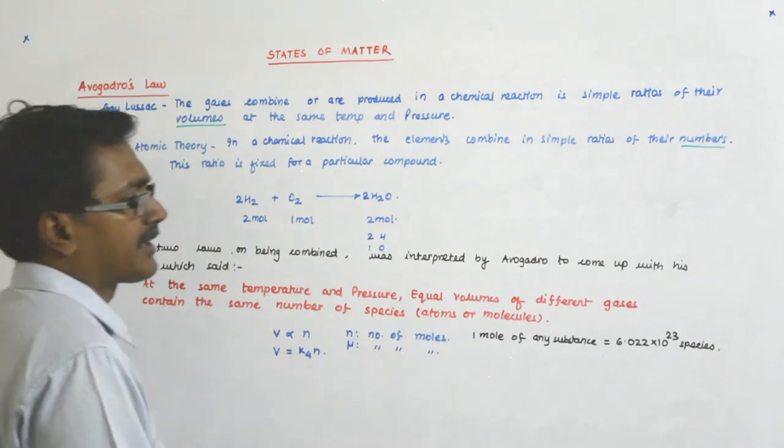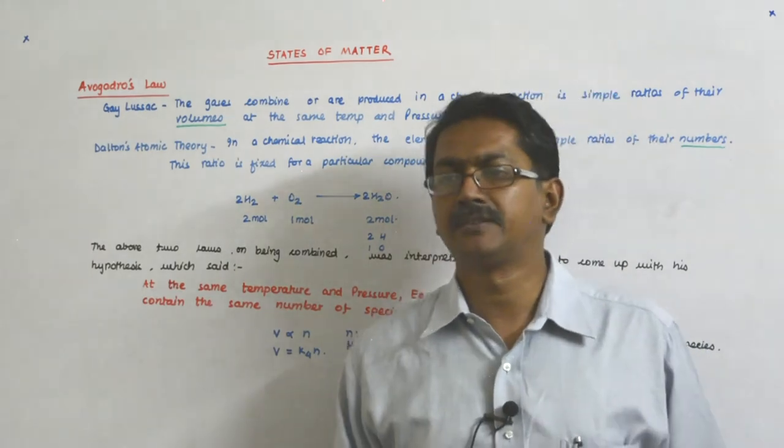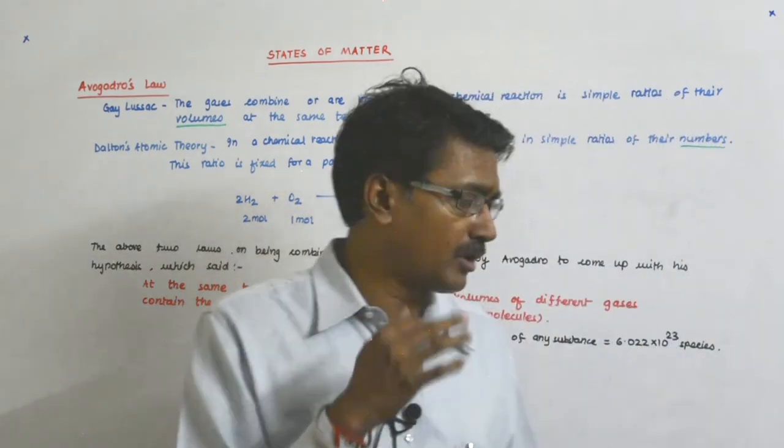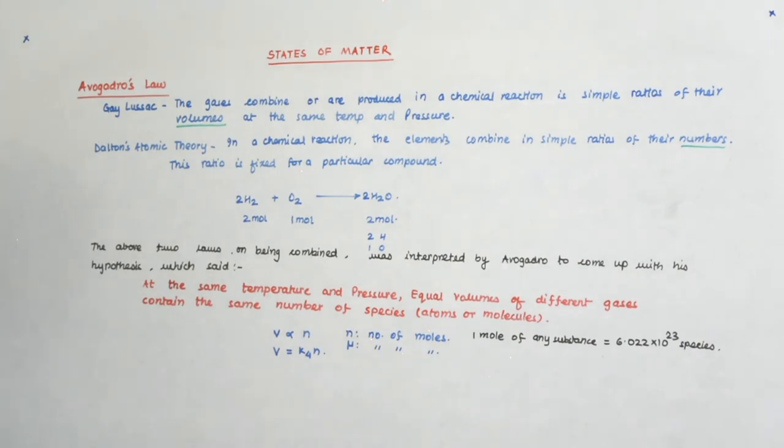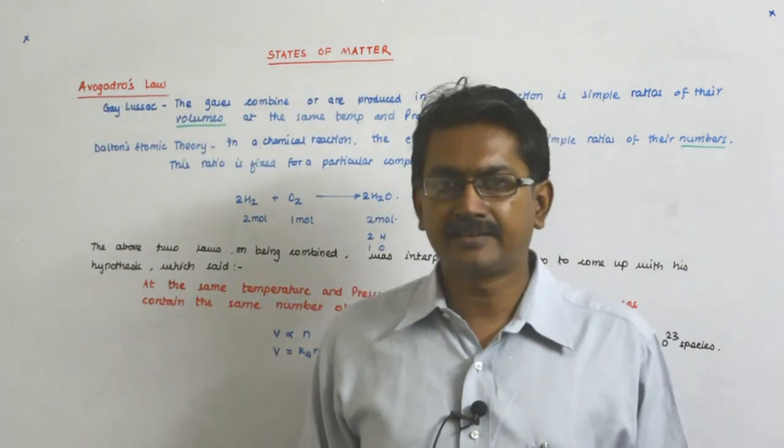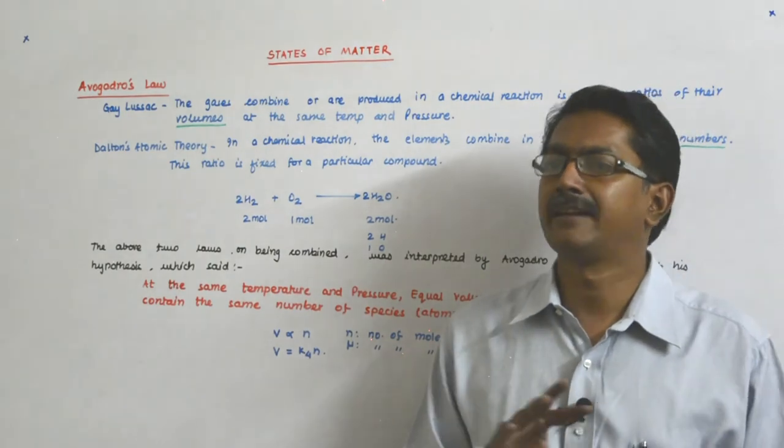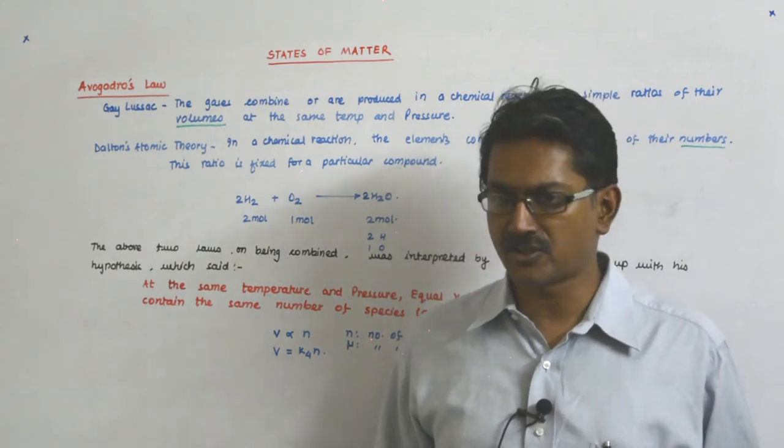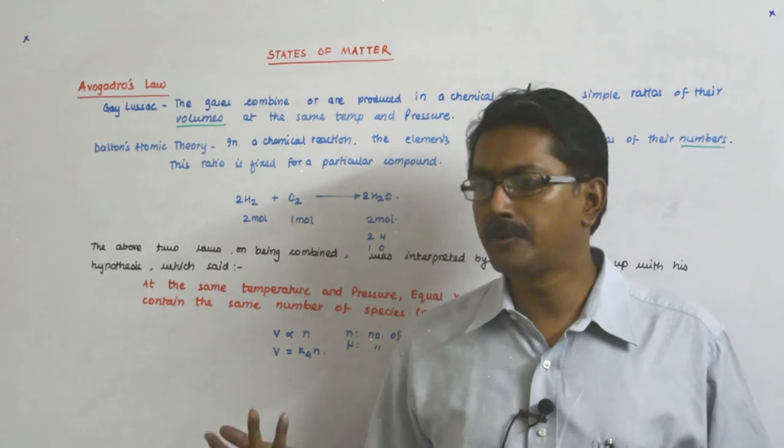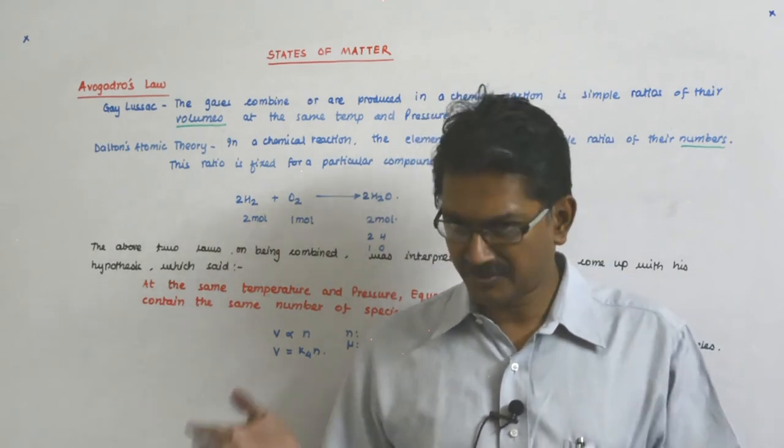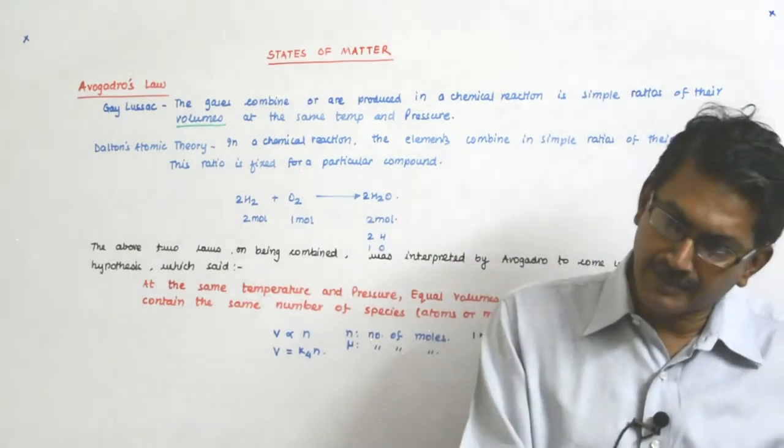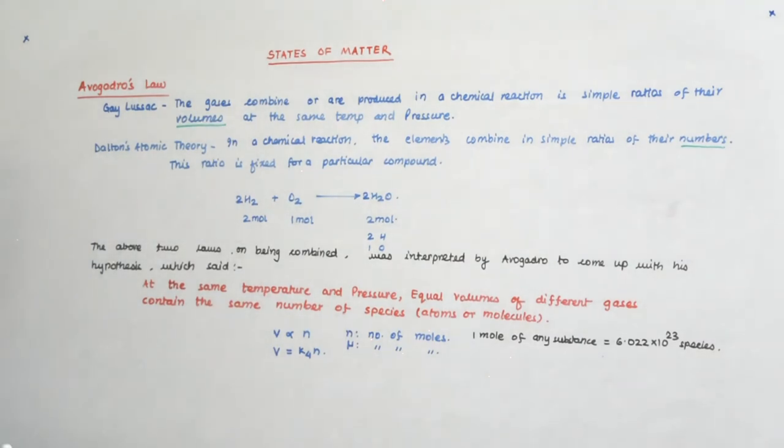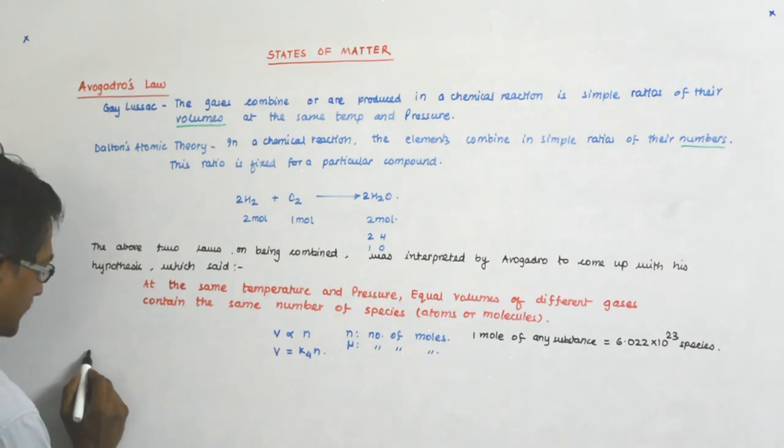Now so what does it say? It says that equal number of gas if it has same volume it will contain same number of particles. So what does it mean? If I do the reverse of it, I say one mole of everything, all gases, at the same temperature and pressure, they should be occupying the same volume, is it not? If the same volume contains the same number of molecules, then the same number of molecules should have the same volume. So this law can be further extended to mean this.